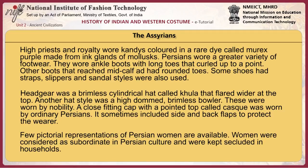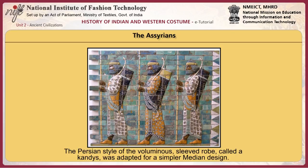Headgear included a brimless cylindrical hat called khula that flared wider at the top, and another high-domed brimless bowler worn by nobility. A close-fitting cap with a pointed top called cask was worn by ordinary Persians and sometimes included side and back flaps to protect the wearer. Few pictorial representations of Persian women are available. Women were considered subordinate in Persian culture and were kept secluded in households. The Persian voluminous-sleeved robe called a candice was adopted for a similar median design, reserved exclusively for the nobility and elite corps of warriors called the 10,000 Immortals.